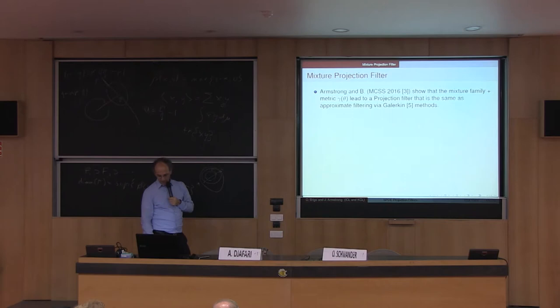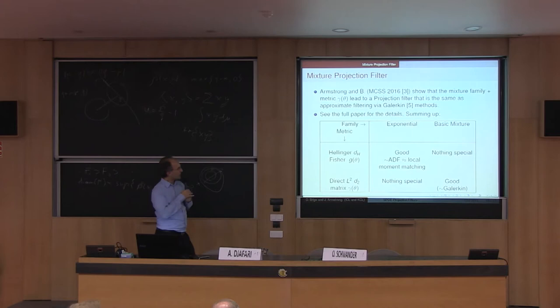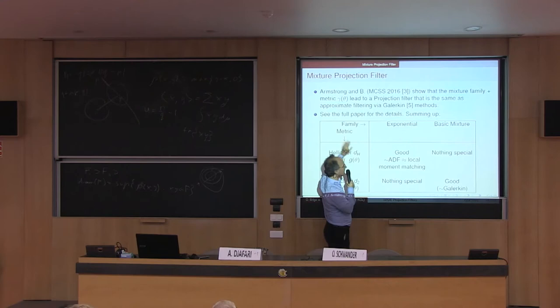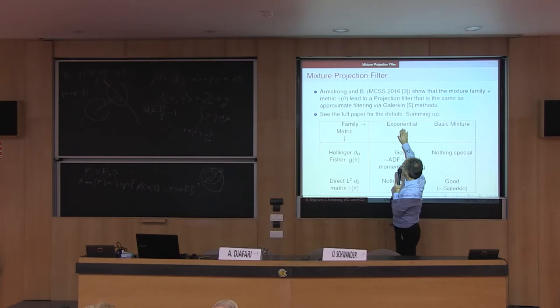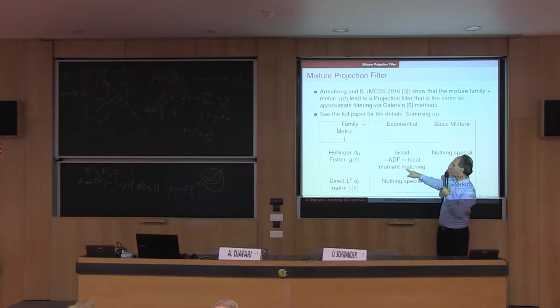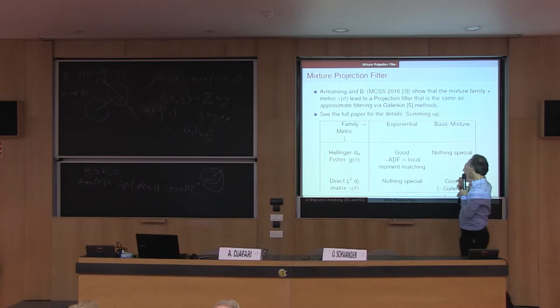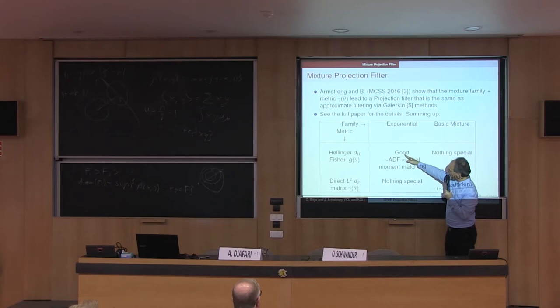This rigorous projection with the direct metric and mixture structure is equivalent to truncating the L2 series — giving the Galerkin method a more rigorous geometric interpretation. To summarize in a table: according to the family of distributions and the metric you choose, you can have a good combination. If you use the Hellinger-Fisher-Rao metric, it works well with the exponential family, equivalent to assumed density filters and local moment matching. If you choose mixture families, they work well with the direct metric and are equivalent to a Galerkin method. You should pick the diagonal of this table.